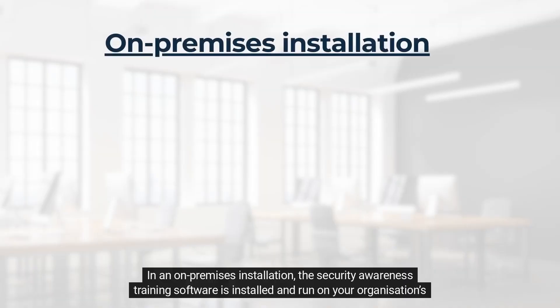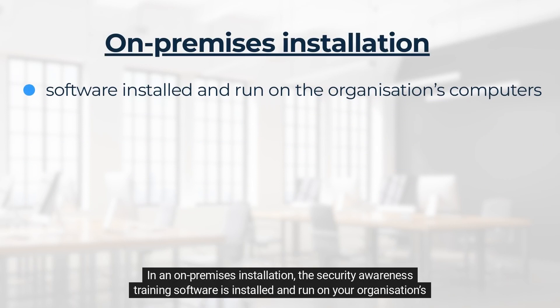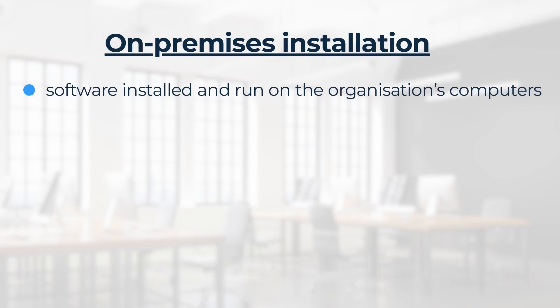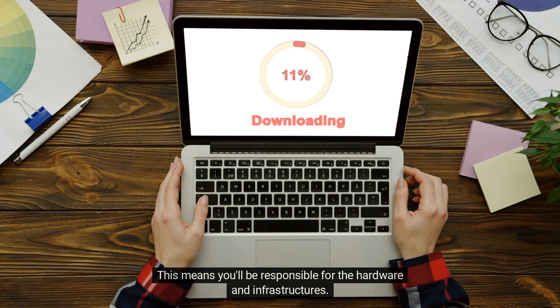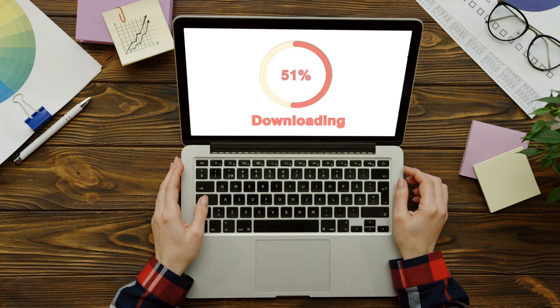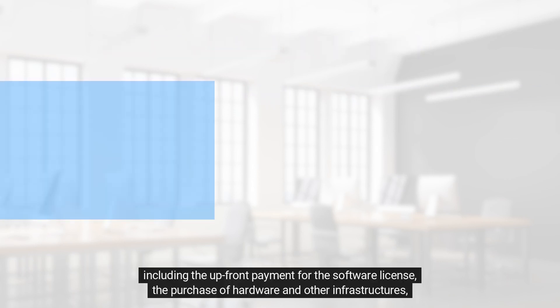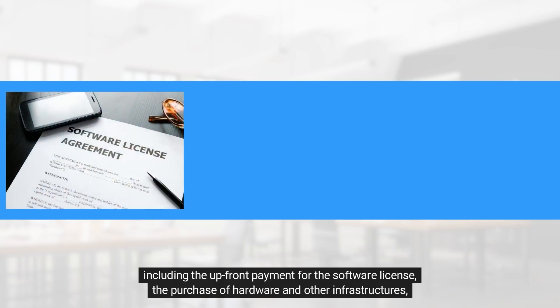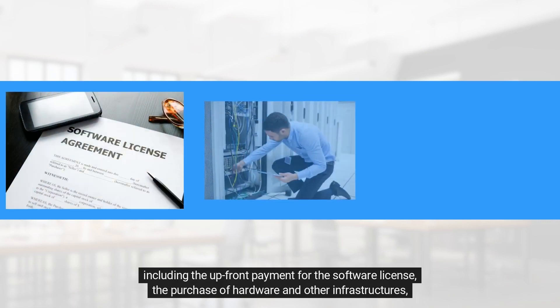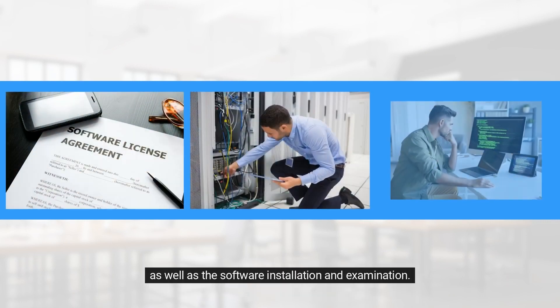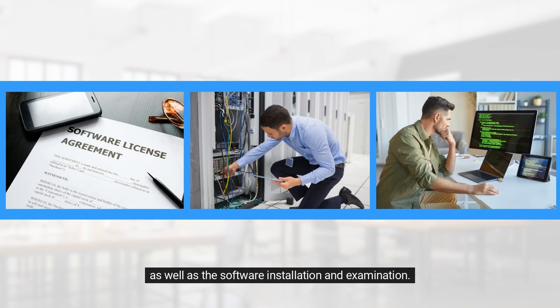In an on-premises installation, the security awareness training software is installed and run on your organization's computers. This means you'll be responsible for the hardware and infrastructure. You will need to pay higher initial costs, including the upfront payment for the software license, the purchase of hardware and other infrastructure, as well as the software installation and setup.